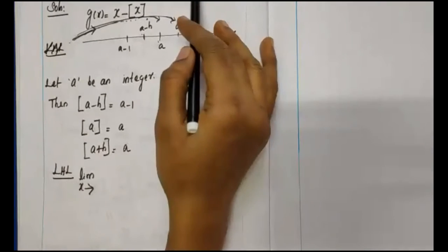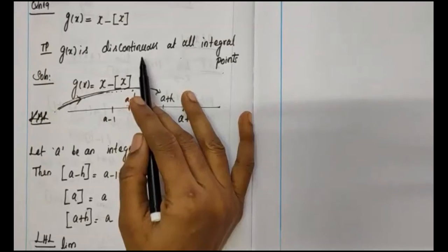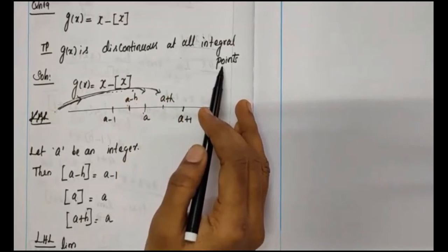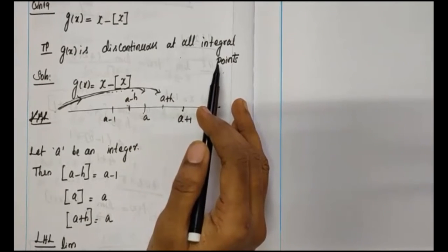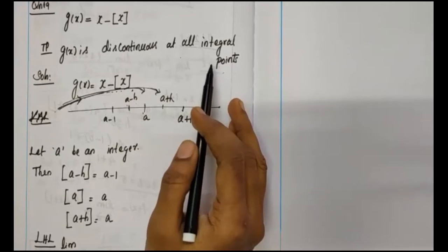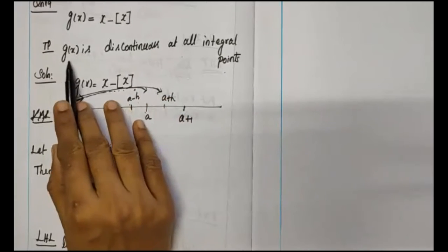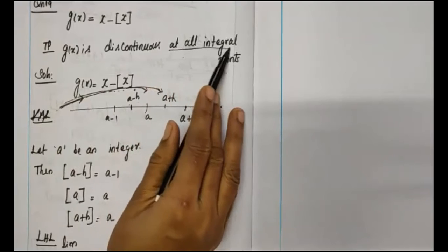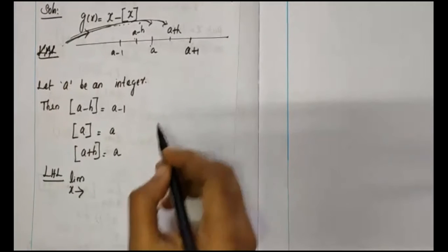We are going to prove that g of x is discontinuous at all integral points. Since we need to prove this for every integral point, we randomly check one arbitrary point. We choose one point a, where a is an integer. At x equal to a, we are going to check continuity by computing the left-hand limit, right-hand limit, and the value of g at a.